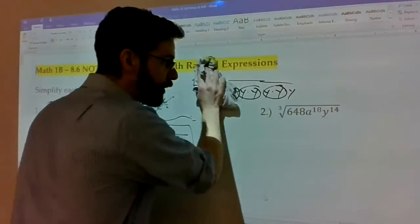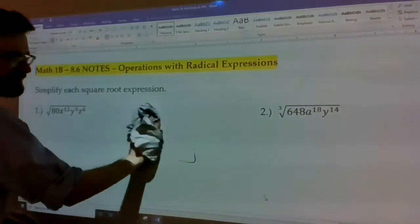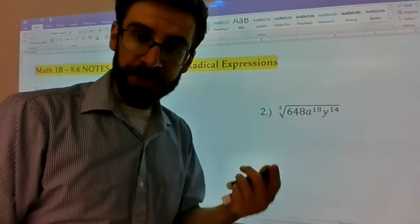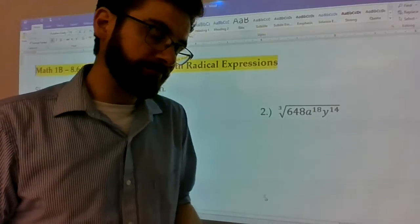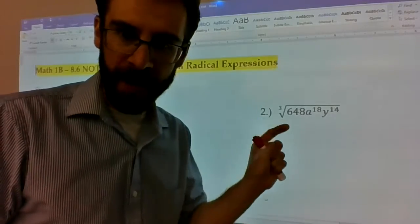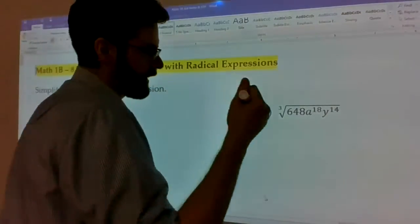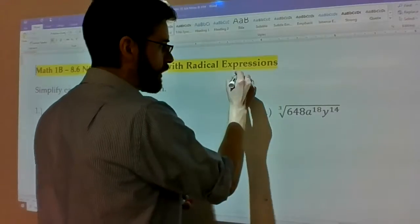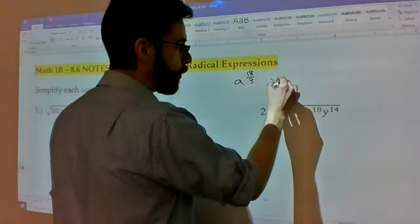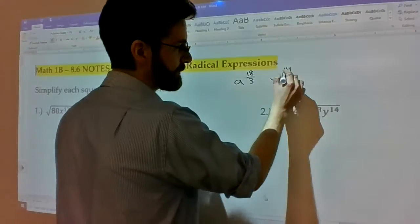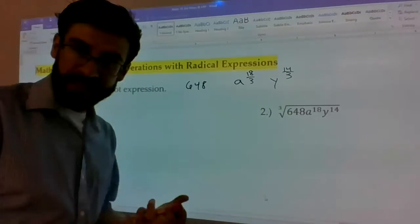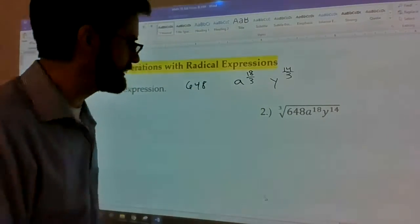Number 2, the only thing that changes with this example is the fact that we are taking the third root or the cube root instead of the square root. Which means you are finding triples, three of a kinds instead of pairs. So, I can do the thing where a to the 18 just gets divided by 3. I do the thing where y to the 14 gets divided by 3. And then I want to simplify 648 by breaking it down with the factor tree and then taking out three of a kinds.